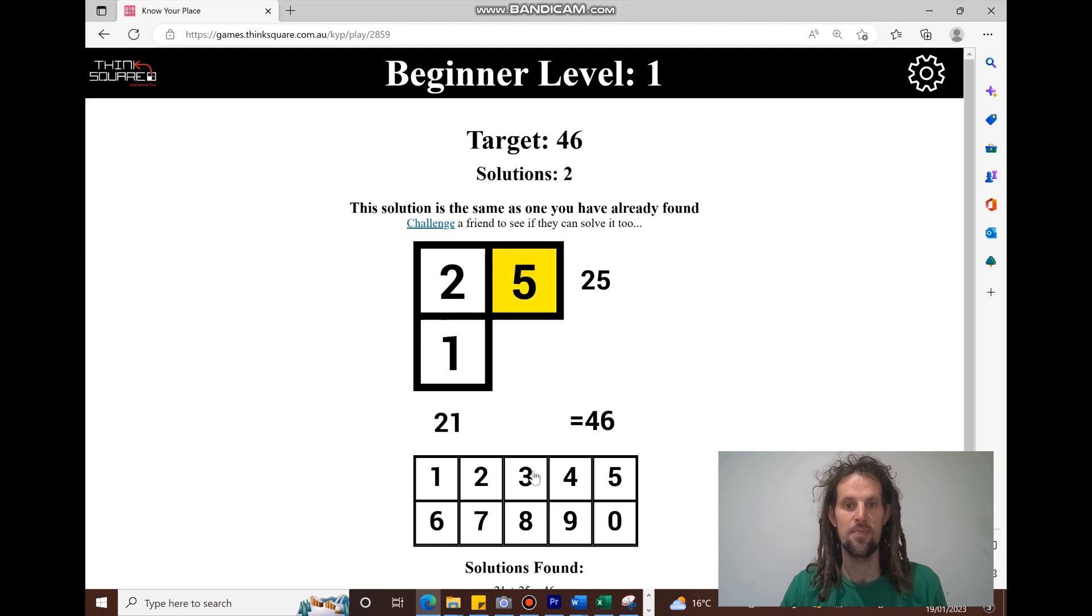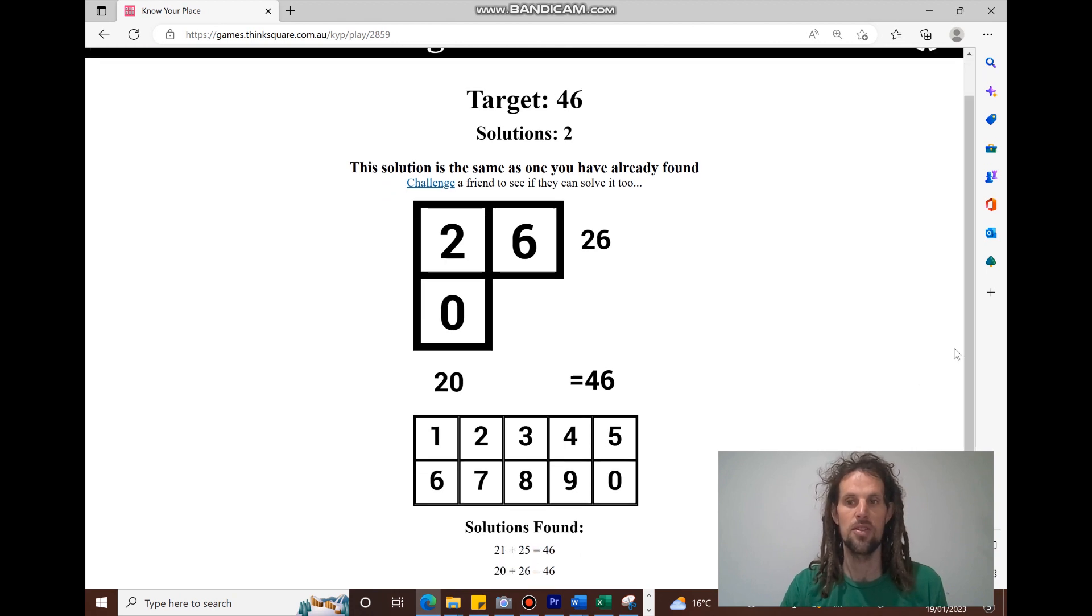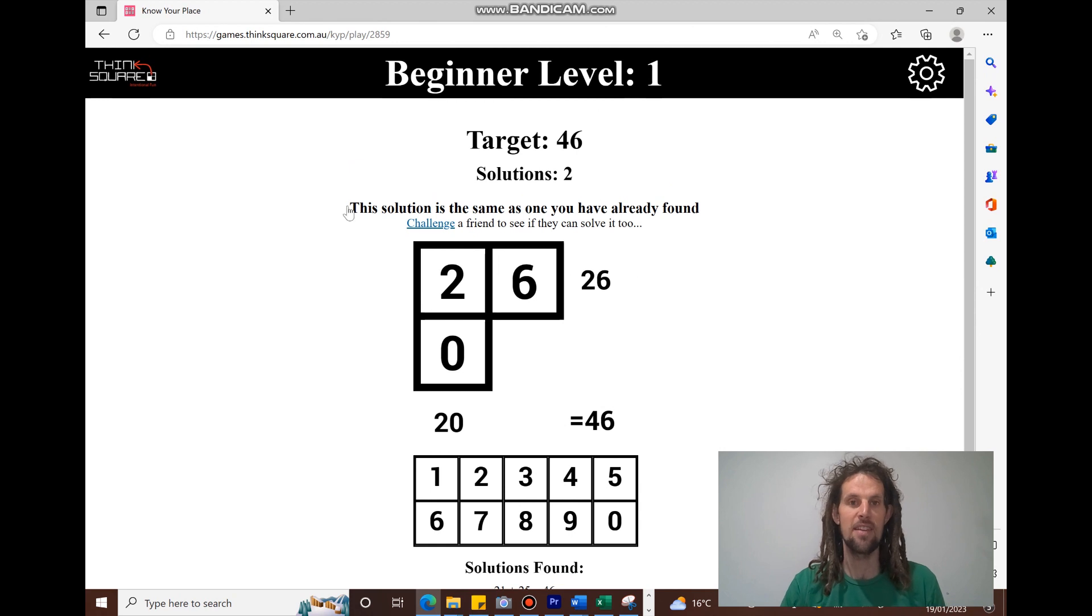The other one will be 26 and 20. So they're the two solutions. Once you've found both solutions, you'll move on. It'll green that box in the main puzzle menu. And if you're logged in again, it'll record those solutions that you found down the bottom there. This is the easiest level.